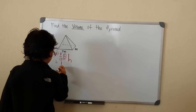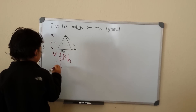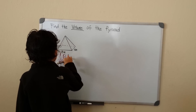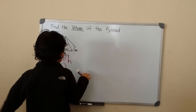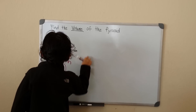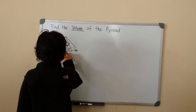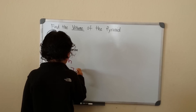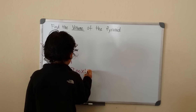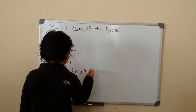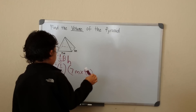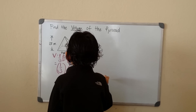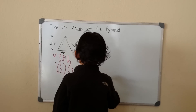It's equal to 1 over 3, and then capital B. We have two bases here: 7 meters and 4 meters, so 7 meters times 4 meters. And then our height, which is 15 meters.